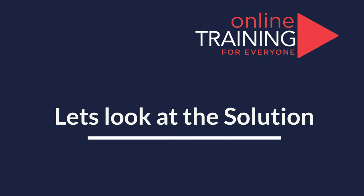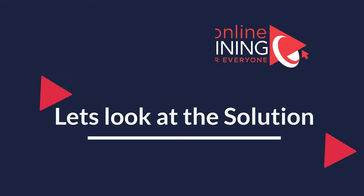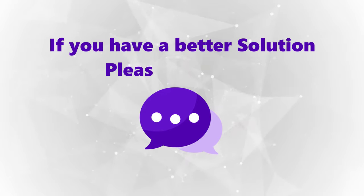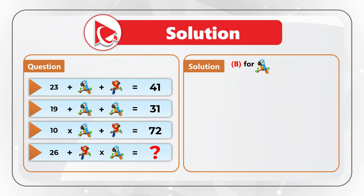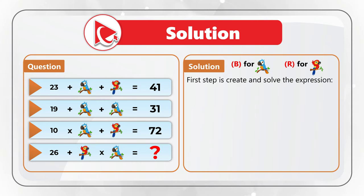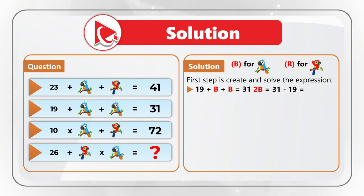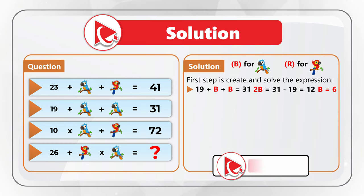I am moving forward to share my version of the solution — if you have a better way to solve it, please post in comments. For simplicity, let's create variables: B for blue parrot and R for red parrot. The easiest expression to solve is the second one: 19 plus B plus B equals 31, which means 2B equals 31 minus 19, which equals 12. So B, the blue parrot, equals 6.